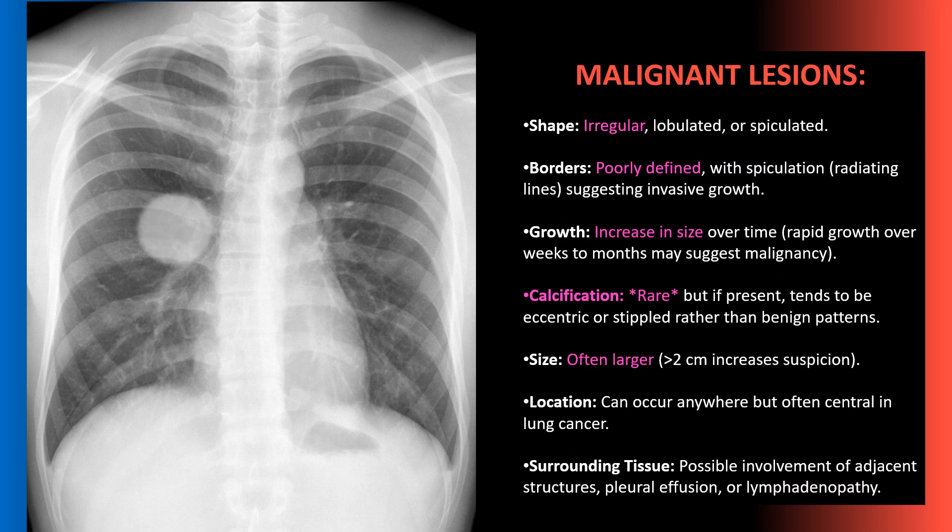Versus a malignant appearing lesion, which will have a more irregular shape and poorly defined margins — you can't quite tell where it is and where it is not. It can grow rapidly over time, rarely will have calcification, and can be larger, often over two centimeters in size. Anything involving the surrounding soft tissues is always going to have a more aggressive component.